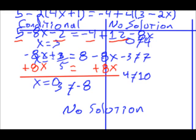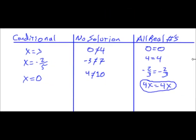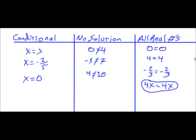We have conditional, no solution, and all real numbers. Conditional is when you get an actual x value. No solution is when you get a contradiction, and all real numbers is when you get an identity.